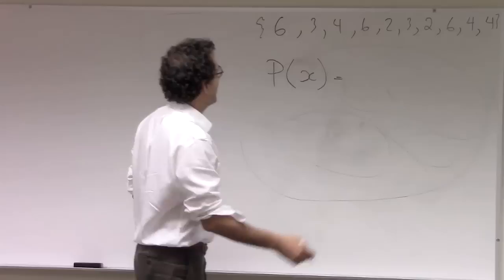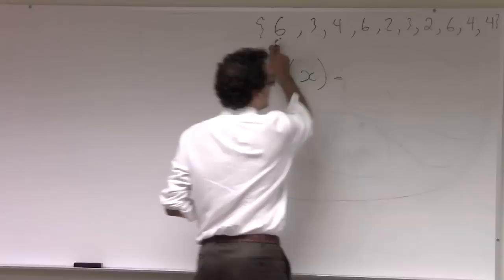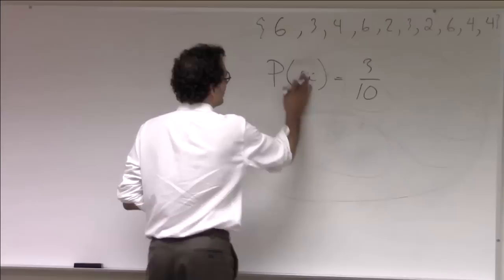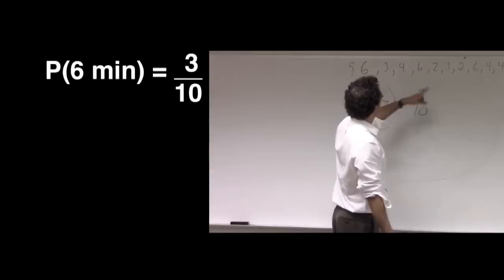The probability of me waiting six minutes to get a cab looks like it's about, well, there's one, two, three times out of ten that I saw a cab after six minutes. So that means it's about a thirty percent chance that I'm going to have to wait six minutes. And for example, the chance that I'll have to wait two minutes looks like it's twenty percent.